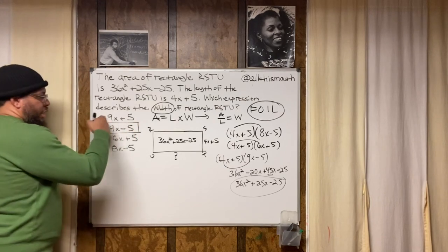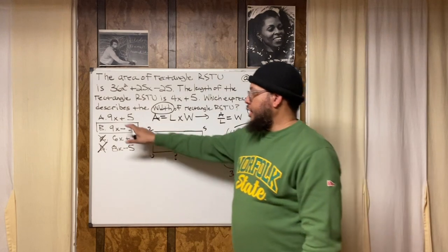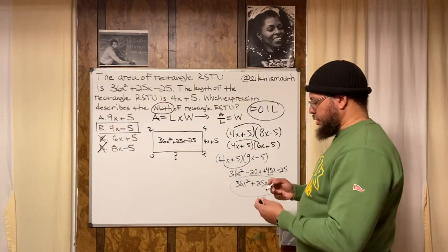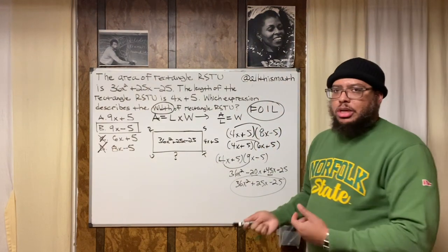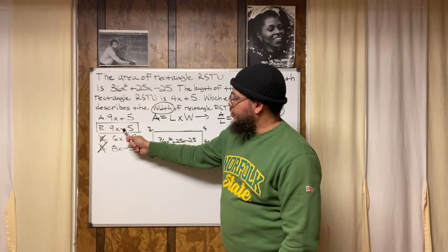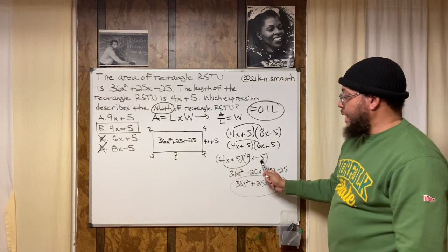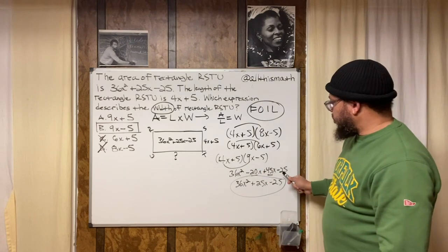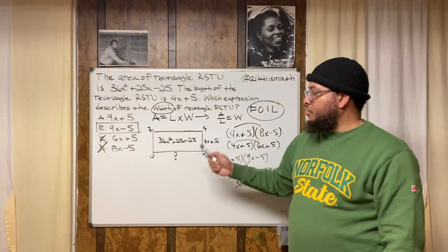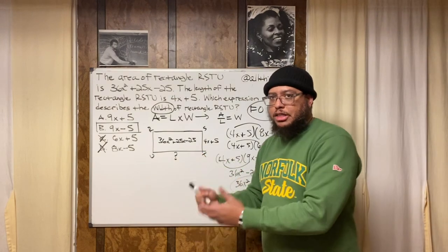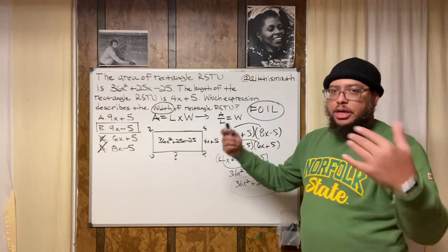I don't even need to test choice A. If 9x − 5 gives us the correct area, there's no way 9x + 5 could. The only difference is the sign on the 5 — if it's positive, then 5 × 5 = +25 at the end of the trinomial. But our area has −25, so choice A would give a positive 25 instead. That confirms B is the answer.